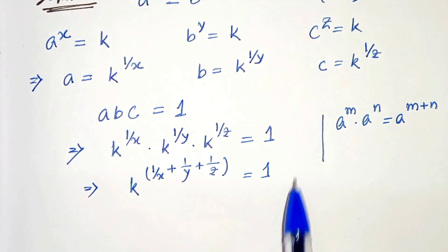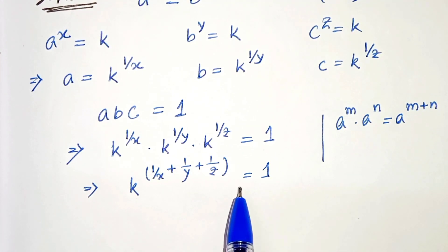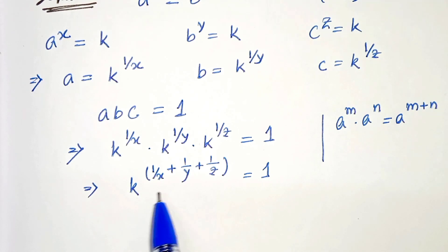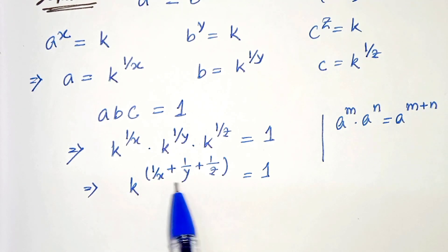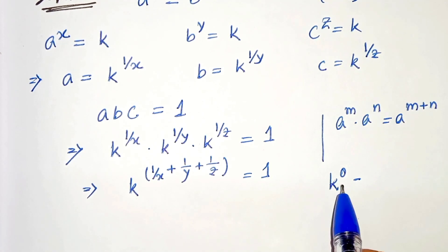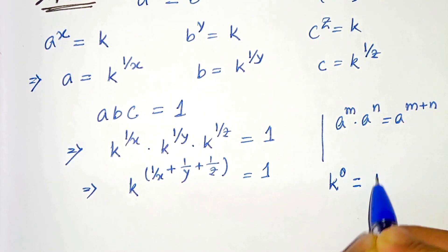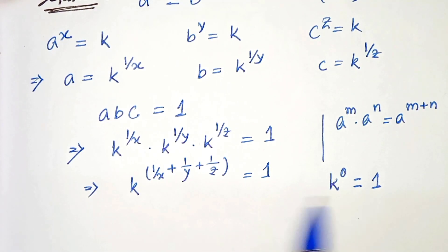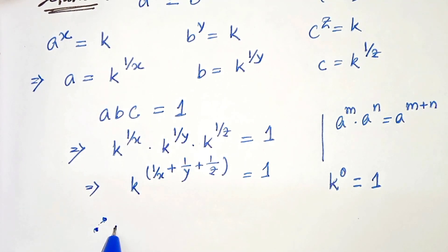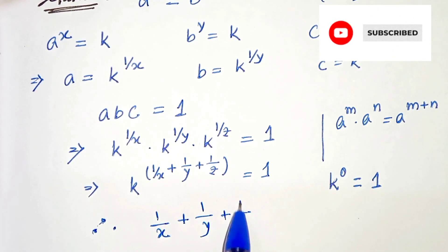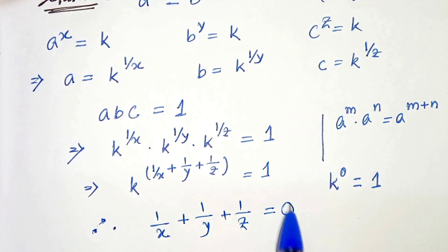Now on the right-hand side we have 1. So on the left-hand side, to get 1 we have only one option: if k's power is 0. That means if we have k raised to the power 0, then we can get 1. Therefore we can compare and write 1 over x plus 1 over y plus 1 over z equals 0.